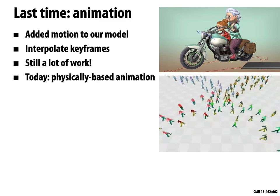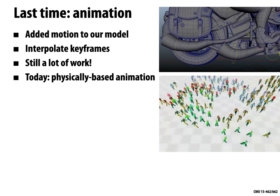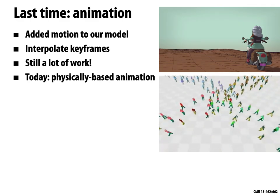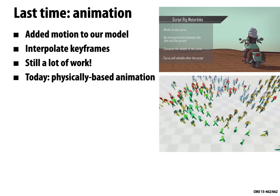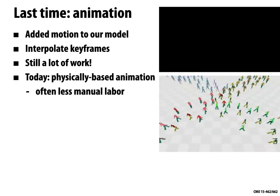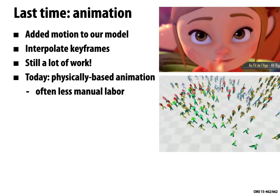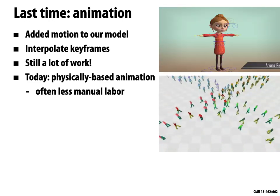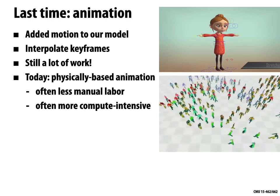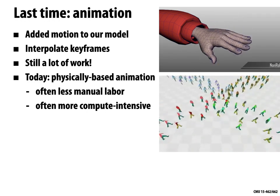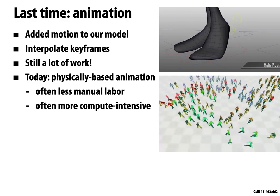Today we're going to look at a different type of computer animation, which is based on physical simulation. The basic idea is we're going to set up some initial conditions, hit go, and the computer is going to predict all the physical behaviors that govern how the rest of the animation unfolds. This is often a lot less manual labor — we might only have to set up initial conditions or some key events. On the other hand, it's often a lot more compute intensive. With splines it was easy to evaluate at any moment in time, but with simulation-based animation, we often have to wait quite a while for the computer to churn through all those calculations.